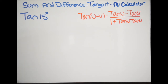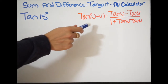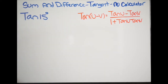In this example, we're being asked to find tangent of 15 degrees, and we have to use either the sum or difference formula in order to figure this out. We cannot use a calculator, but to the right here I have the difference formula written for tangent, because that's what we're going to use here.